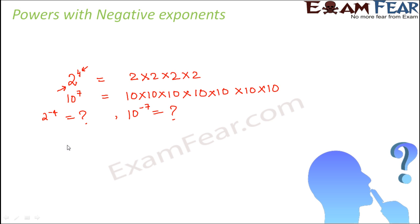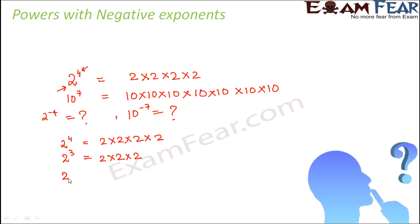Let's do this exercise. We see that 2 to the power 4 is 2 multiplied to itself 4 times. 2 to the power 3 would be 2 into 2 into 2. 2 to the power 2 would be 2 into 2. 2 to the power 1 would be 2, because 2 is multiplied to itself only once. And 2 to the power 0 means 2 is not at all multiplied to itself, so this is basically 1.